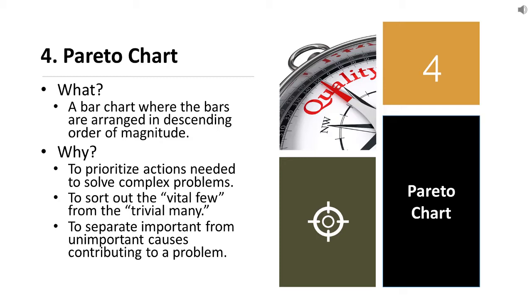Pareto chart will help you in identifying where you need to give your priority. Basically, this helps you in sorting out the vital few from the trivial many. Instead of working on trivial many items, you just work on vital few items, and that way you can improve quality faster.